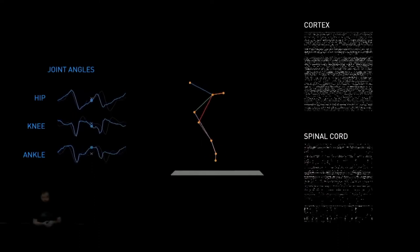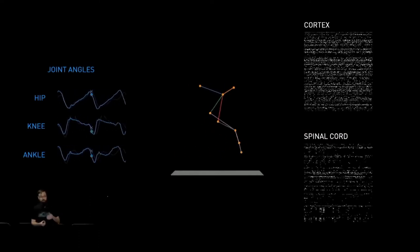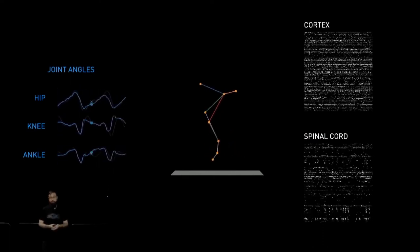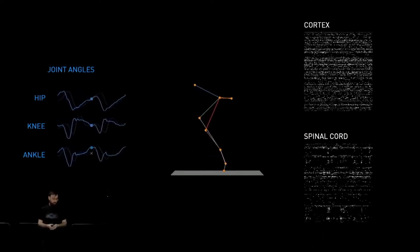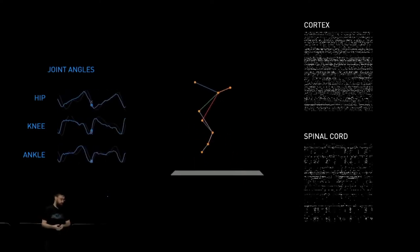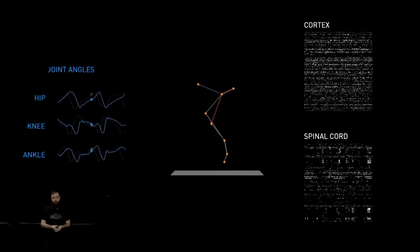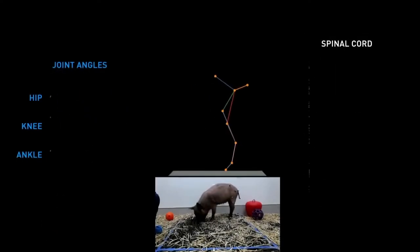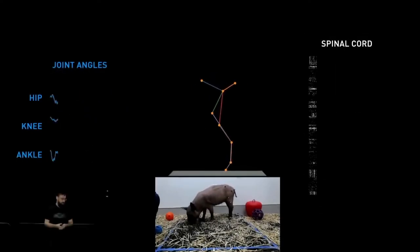This pig has more than one Neuralink device. There's a device in the brain, but there's also one in the spinal cord. And we can stream neural data from these devices in real time and use them to do things like decode the movement of the joints of the pig. So here you can see on the left a time series of the hip, knee, and ankle, and we're decoding those movements. And as before, you can see we're able to track the position of the joints and also stream neural data as well.